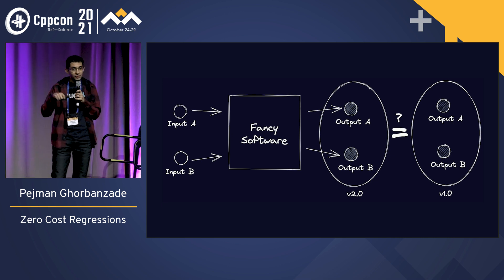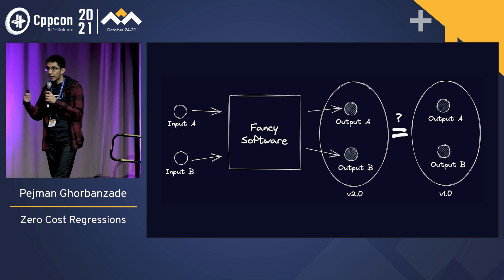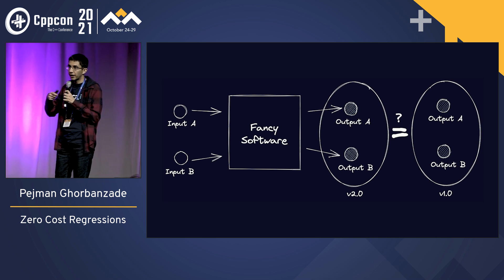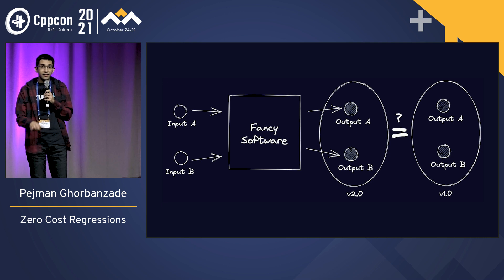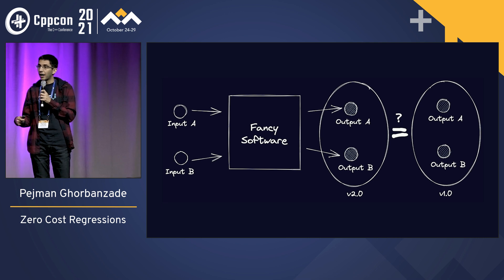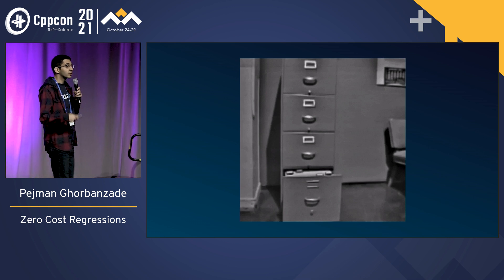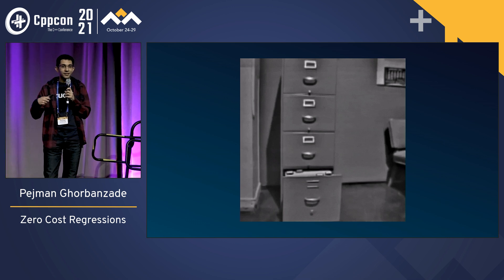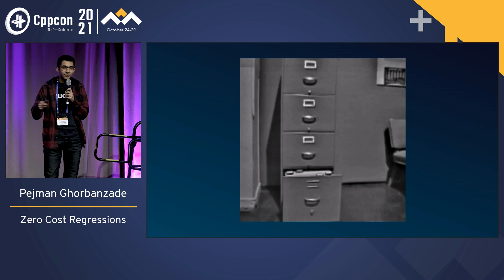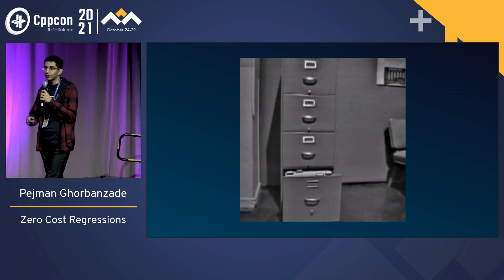We can serialize all this output into files and check those files somewhere. When we have a next version of our code, we have a new set of files, so we can compare them with each other. This is actually really problematic because we end up with so many files that finding the differences between them becomes a full-time job.